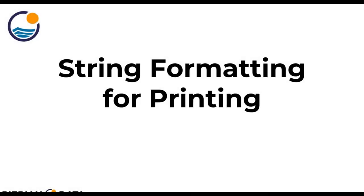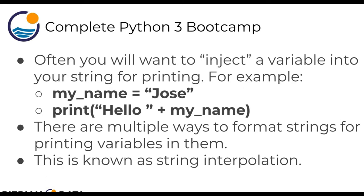Welcome back everyone. Let's now discuss string formatting for printing. Often you're going to want to be able to inject a variable into your string for printing. We already learned about concatenation — for example, you may have a variable called my_name equal to Jose and you want to print the phrase 'hello Jose'. There are actually multiple ways to format strings for printing variables, and this is generally known as string interpolation, which is basically just a fancy way of saying stick a variable into a string.